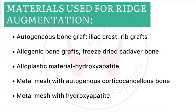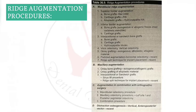Materials used for ridge augmentation include: autogenous bone graft (from iliac crest or rib graft), allogenic bone graft (freeze-dried cadaver bone), alloplastic material, metal mesh with autogenous corticocancellous bone, and metal mesh with hydroxyapatite.